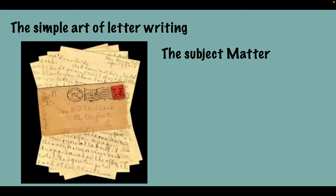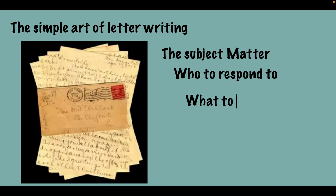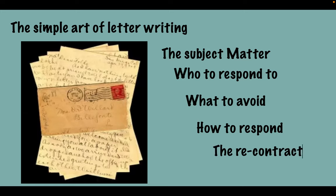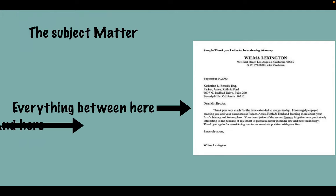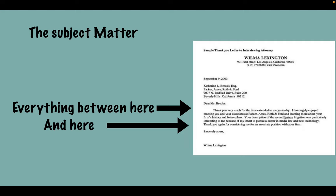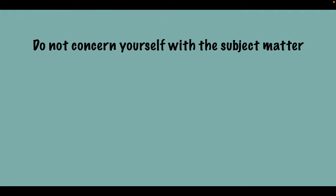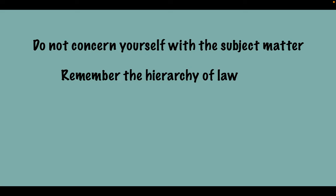Today we're going to be going through several things in line with that. The first one is going to be the subject matter — whenever we get a letter sent to us there will be subject matter. We've got to address who we're sending it to, what to avoid, how to respond, and finally the recontract. Everything between here and here is the subject matter. There are only two parts that are not subject matter: the name at the top, Catherine, and the name at the bottom, Wilma. Everything else is the subject matter, but we're not going to concern ourselves with that.